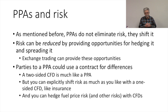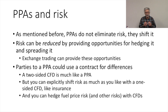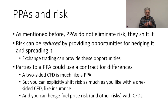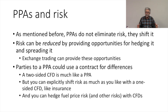Risk can be reduced by providing opportunities for hedging risk and for spreading risk. And this provides another rationale for exchange trading some significant share of electricity that is sold. If we have a significant share of electricity traded in markets, then there will be opportunities for buyers and sellers to hedge risks and to spread risk around across counterparties in a way that can make the risk less costly.